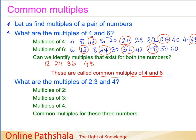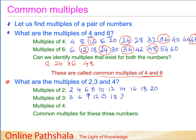Now we can try the same thing for three numbers. We are going to write the multiples of 2, 3, and 4. Multiples of 2: 2, 4, 6, 8, 10, 12, 14, 16 — we'll write multiples up to multiplying by 10. For 3, it is just like writing the table of 3, giving us 3, 6, 9, 12, 15, 18, 21, 24, 27, 30. And for 4 we have 4, 8, 12, 16, 20, 24, 28, 32, 36, and 40.